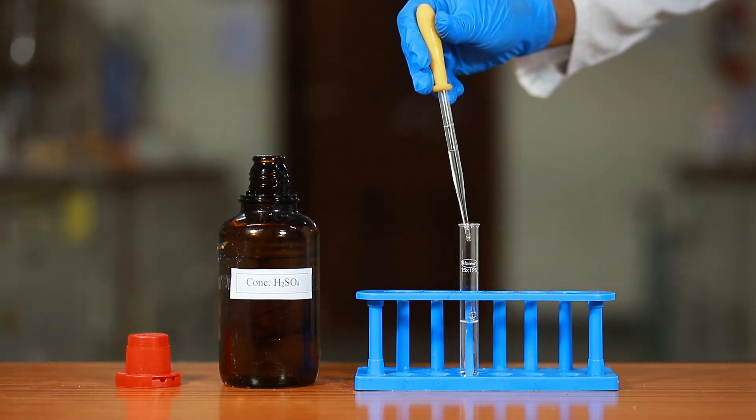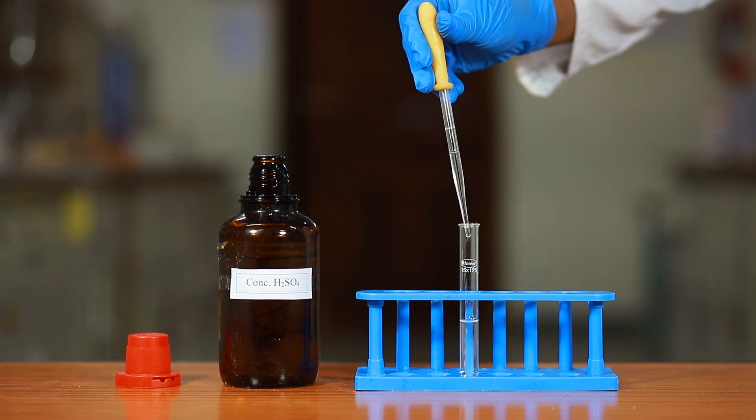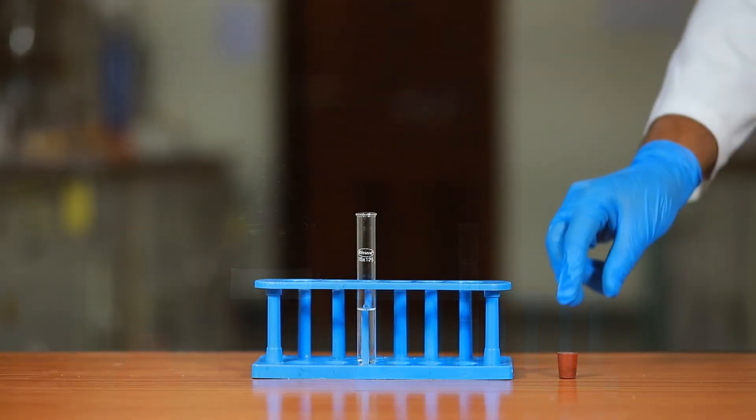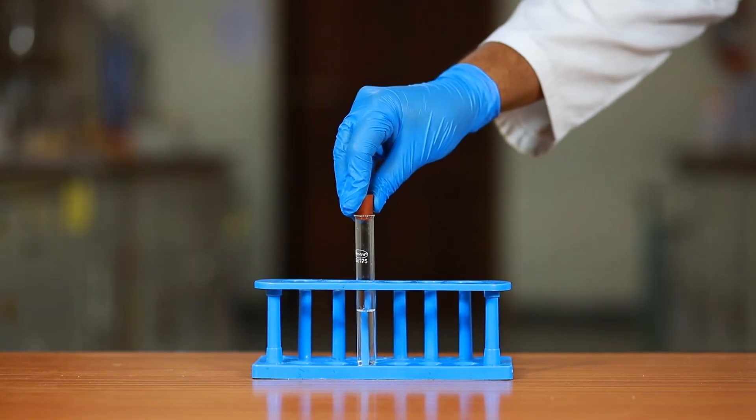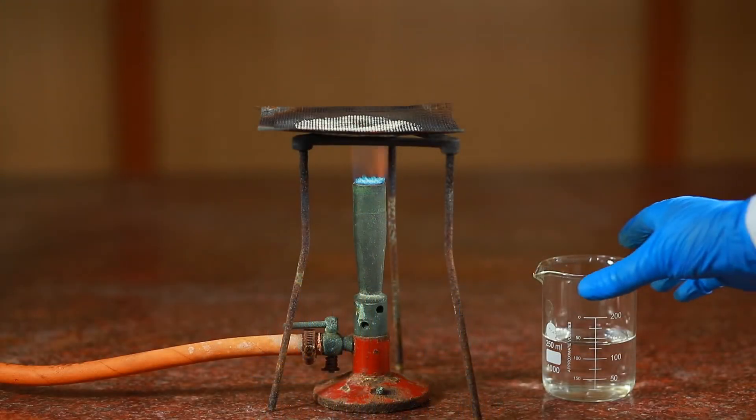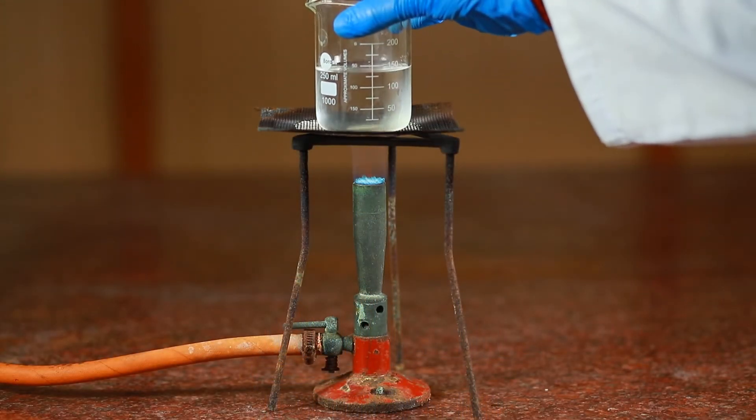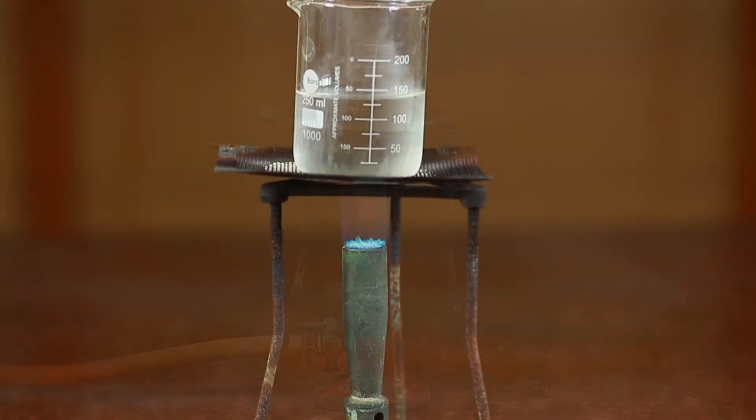Put a cork loosely over the mouth of the test tube. Take about 150 ml water in the beaker and heat it to about 60°C.